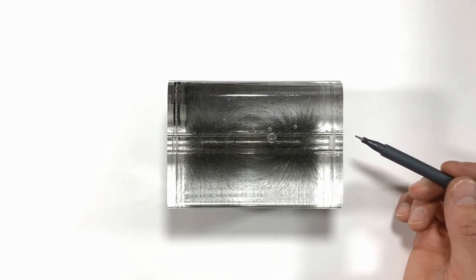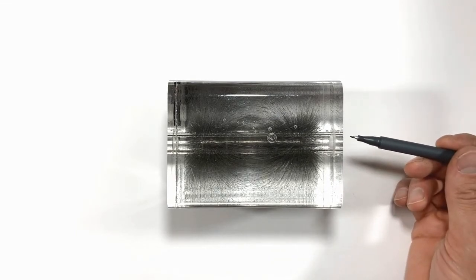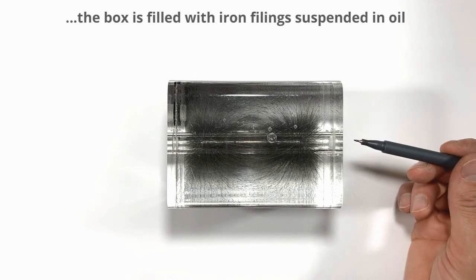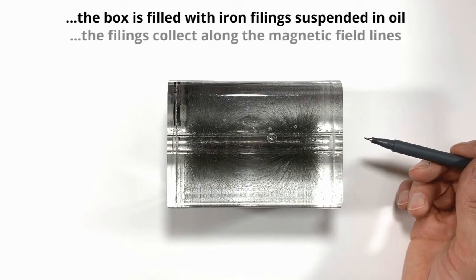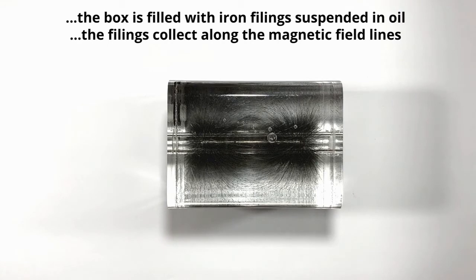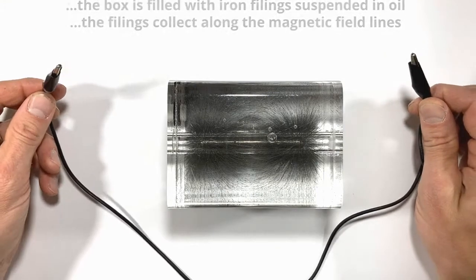We've seen in the past that a permanent magnet like the one placed inside of this box produces something called a magnetic field, and today I'm going to show you that a moving charge, something like a wire, also produces a magnetic field.